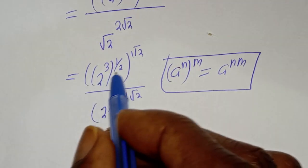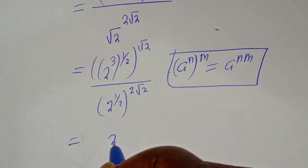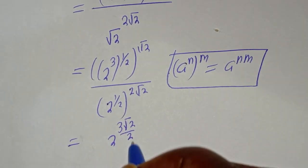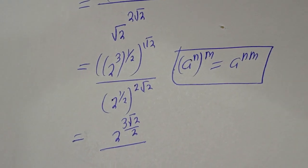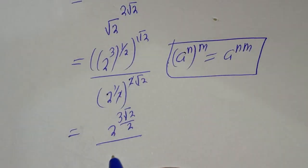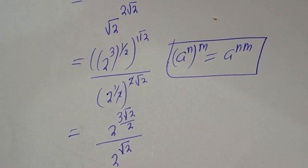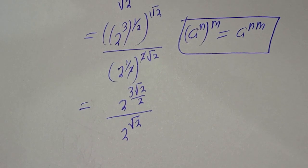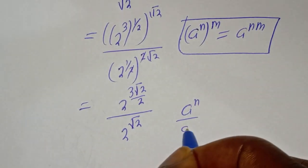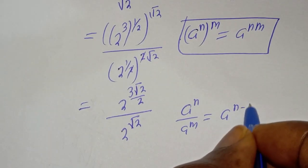Then this can be written as 2 raised to power 3 times root 2 over 2, divided by — this will cancel — 2 raised to power root 2. Now if you have a raised to power n over a raised to power m, this is equal to a raised to power n minus m.